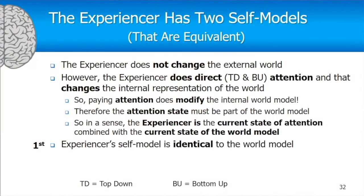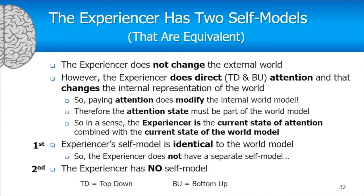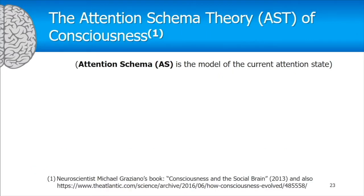If the experiencer doesn't have a separate self-model, you could say the experiencer has no self-model because it's no different from the world model. This experiencer self-model is directly related to a neuroscience theory called attention schema theory by neuroscientist Michael Graziano. The attention schema is exactly the same as the model of the current attention state.